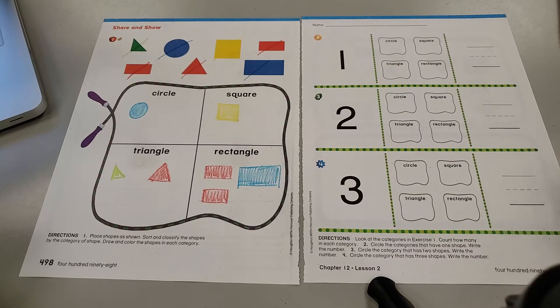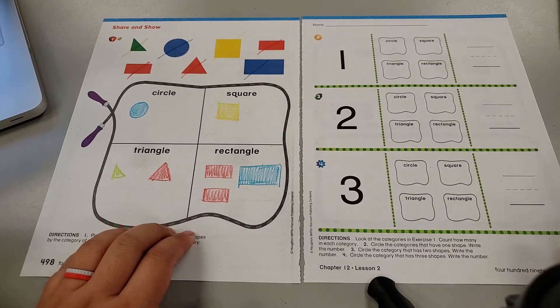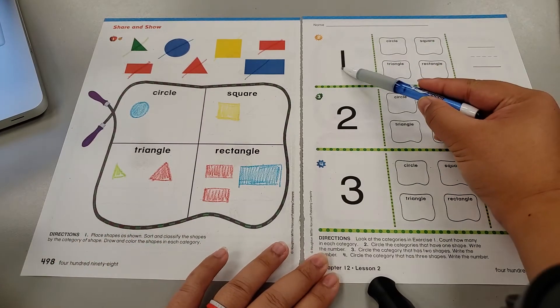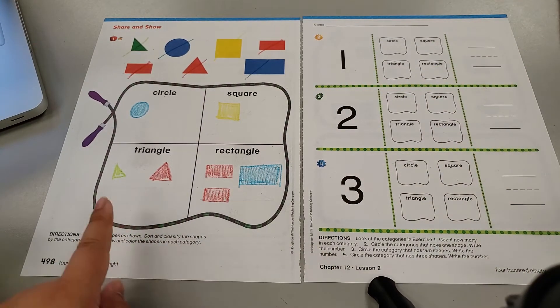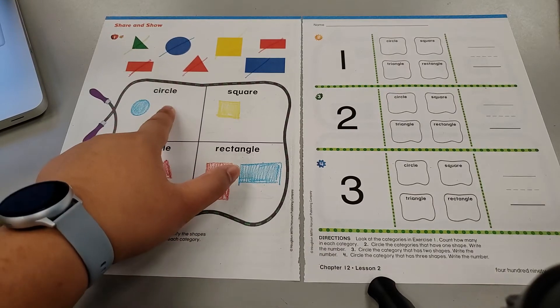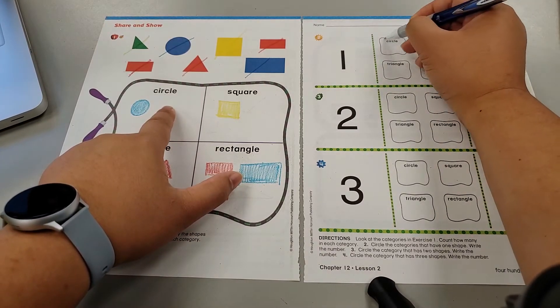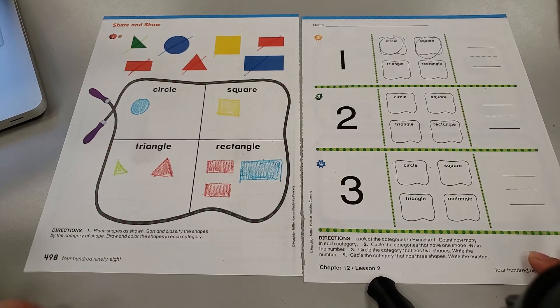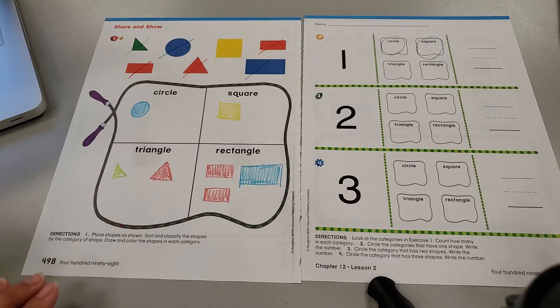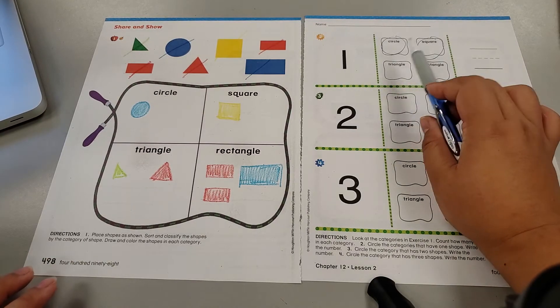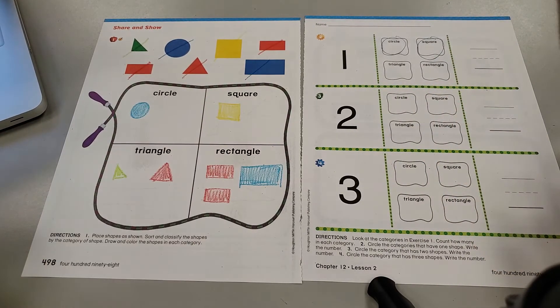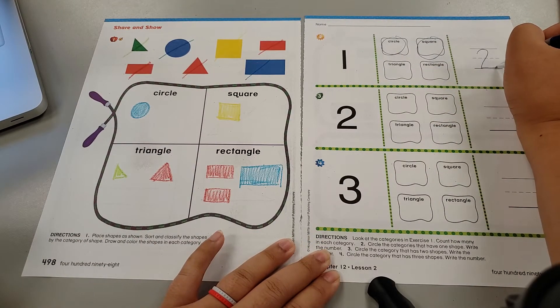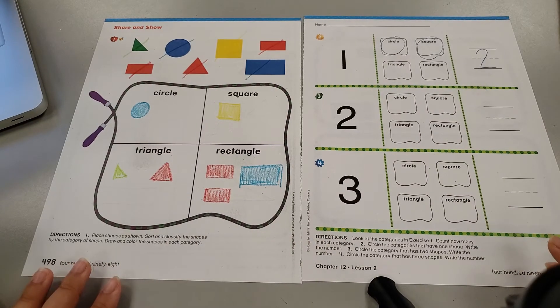One. Look at the categories here. How many categories have one shape? Okay, let's see. Circle has one shape. And square has one shape. So I have circled my categories. How many categories did I find that had one shape? There are two. So please make sure that you write the number two on the line.